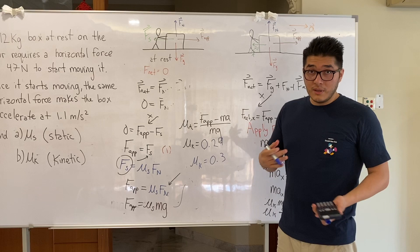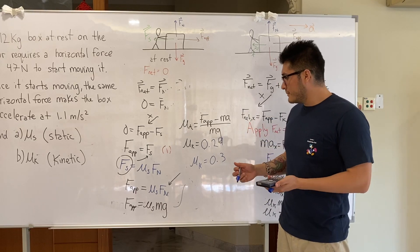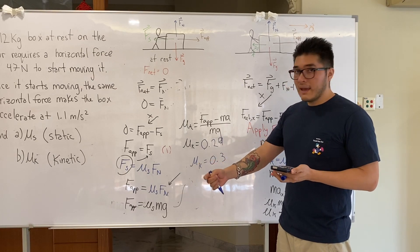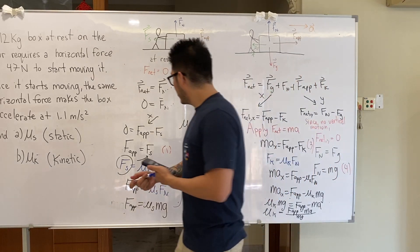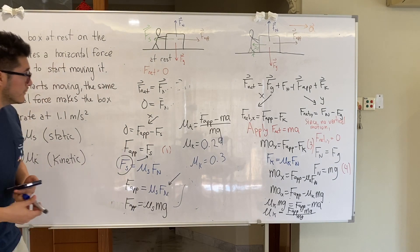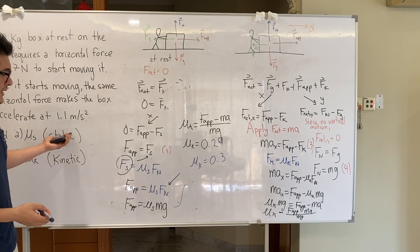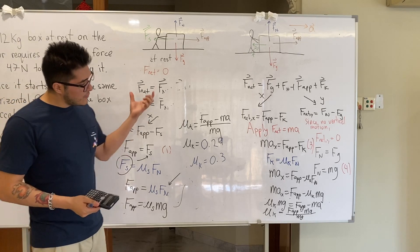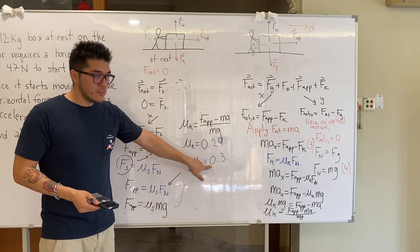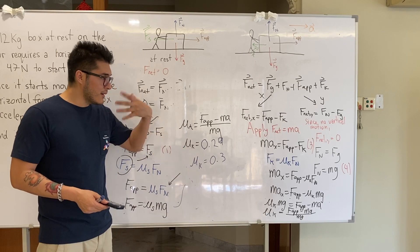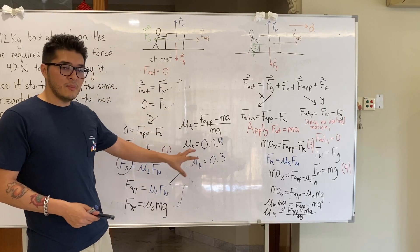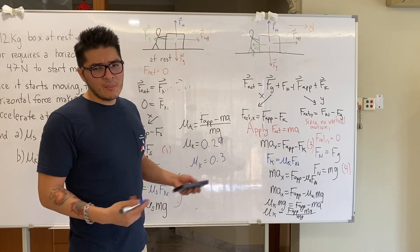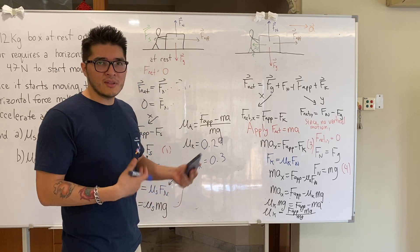This result makes sense: coefficients of friction are typically between 0 and 1. The static friction coefficient was 0.4 and the kinetic one is 0.3, which confirms that static friction is greater than kinetic friction, as expected. That wraps up the problem — let's move on to a different type of example in the next question.